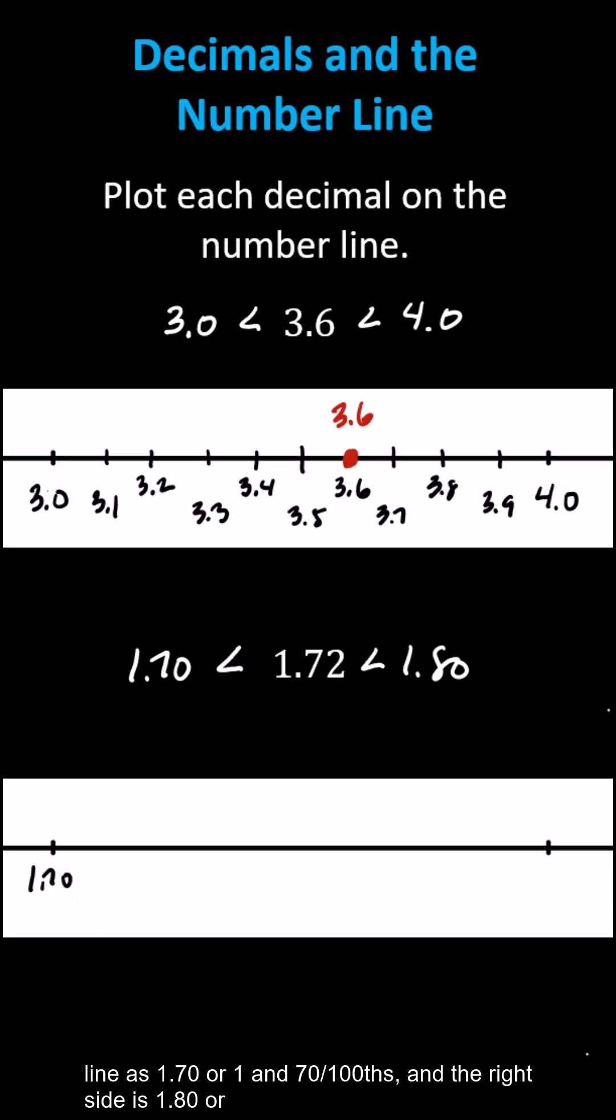And the right side as 1.80 or 1 and 80 hundredths. And now we'll break up this interval into 10 equally sized parts, where each tick mark will represent 1 hundredth.